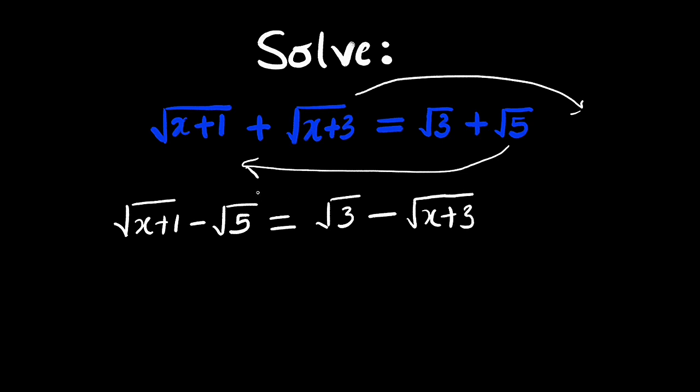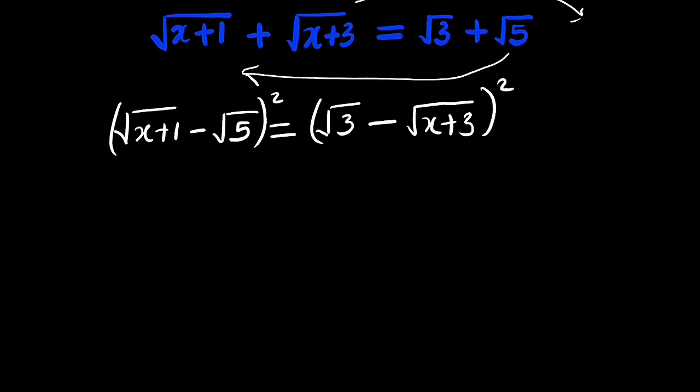So from here, we can square both sides. Square this side and square the other side. Let me expand the left hand side. You take this term and square that. It will eliminate the square root leaving x plus 1. So we have x plus 1. Then you do the same thing to the second term. First term squared, you have plus 5. Then minus, because of that minus sign, 2 multiplied by the first and the second term together. So we have root 5 times root of x plus 1.